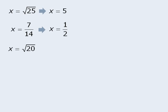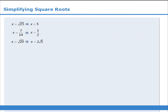Even though there is no nice integer equivalent of the square root of 20, we can still simplify this as 2 times the square root of 5. In this lesson we will learn how to perform these kinds of simplifications.